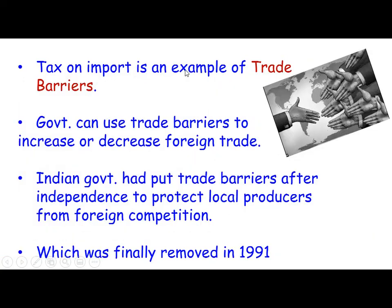Taxes on imports are an example of a trade barrier. The government can use trade barriers to increase or decrease their foreign trade. After independence, the Indian government put trade barriers in place to protect local producers from foreign competition. Finally, this trade barrier was removed in 1991 when the government felt that the local market was ready to compete with foreign goods.